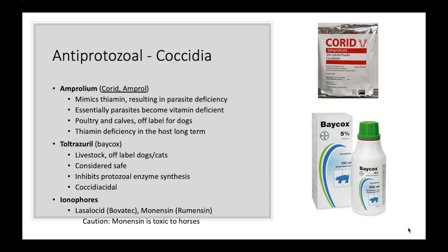Moving on: toltrazuril, also known as Baycox — not in the textbook — is typically used on livestock and off-label for dogs and cats. It's considered very safe, inhibits protozoal enzyme synthesis, and is coccidiocidal, actually killing off the coccidia. One thing about toltrazuril: it tastes horrible — cats hate it — so please mix it with tuna water or something.